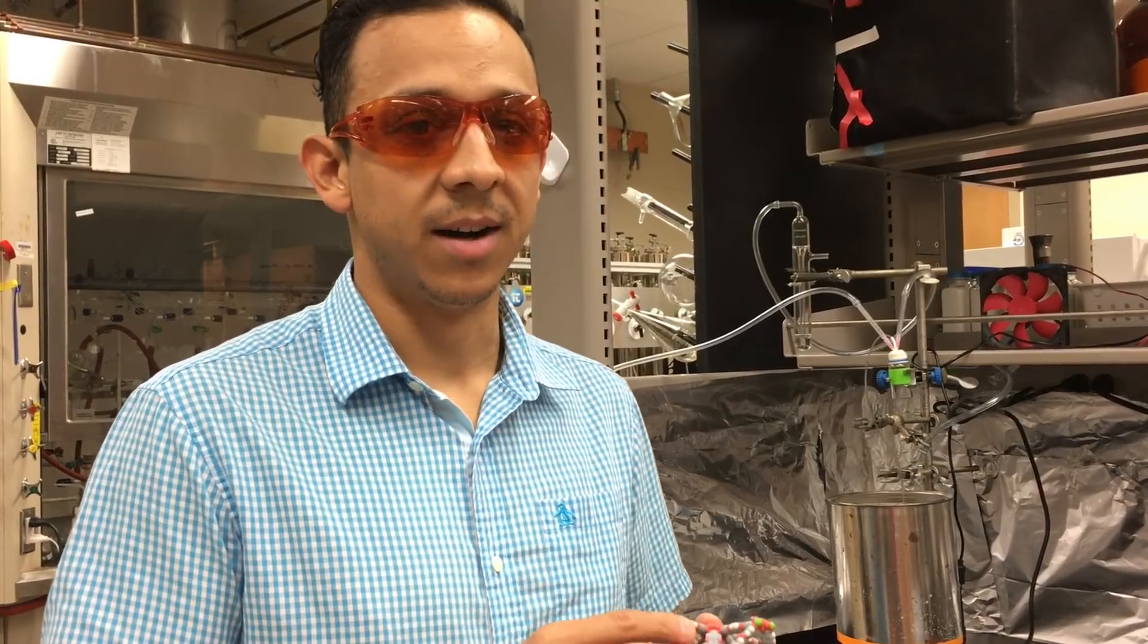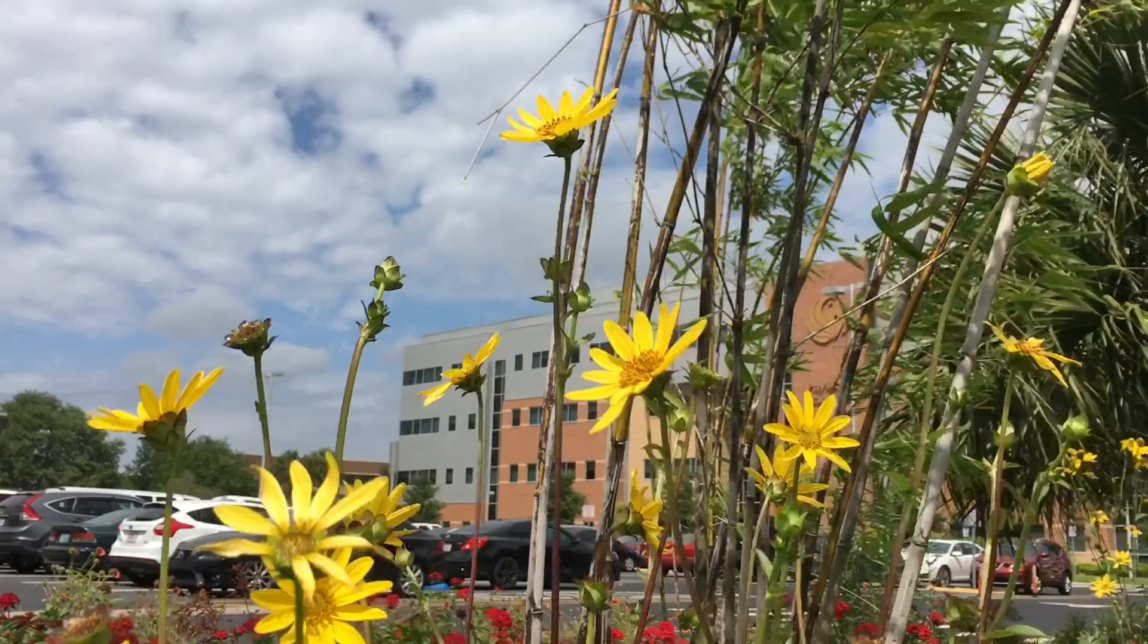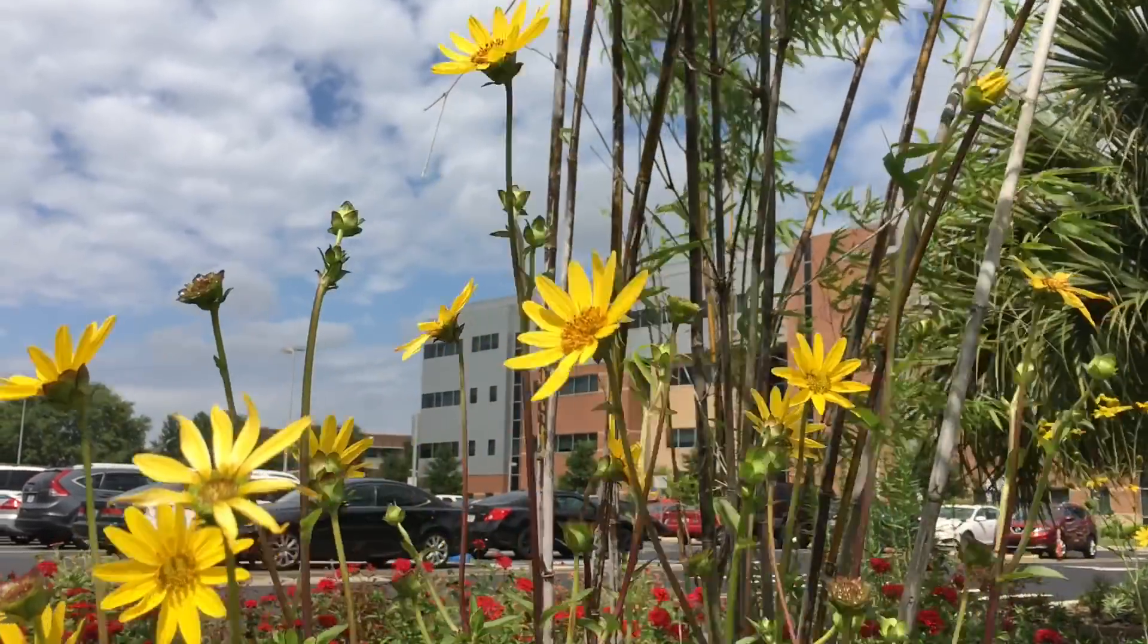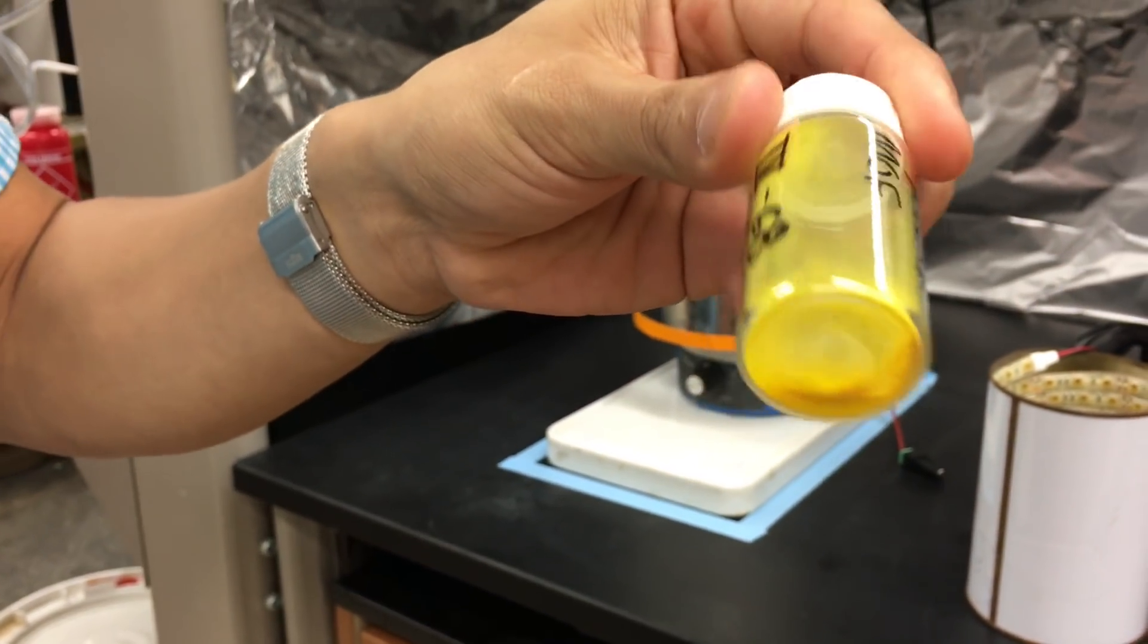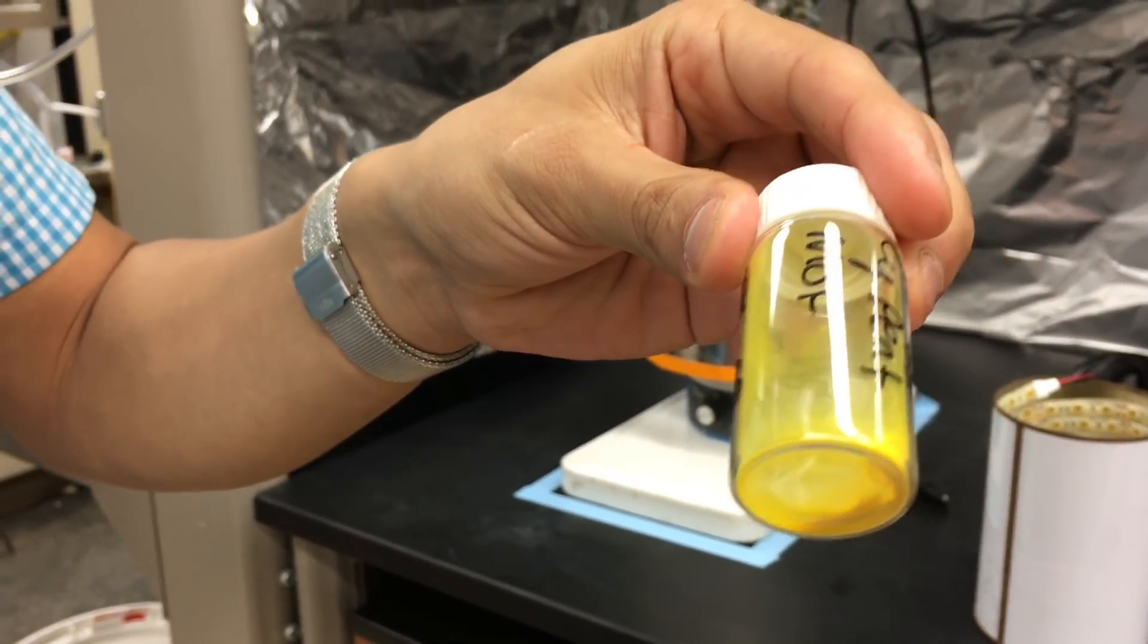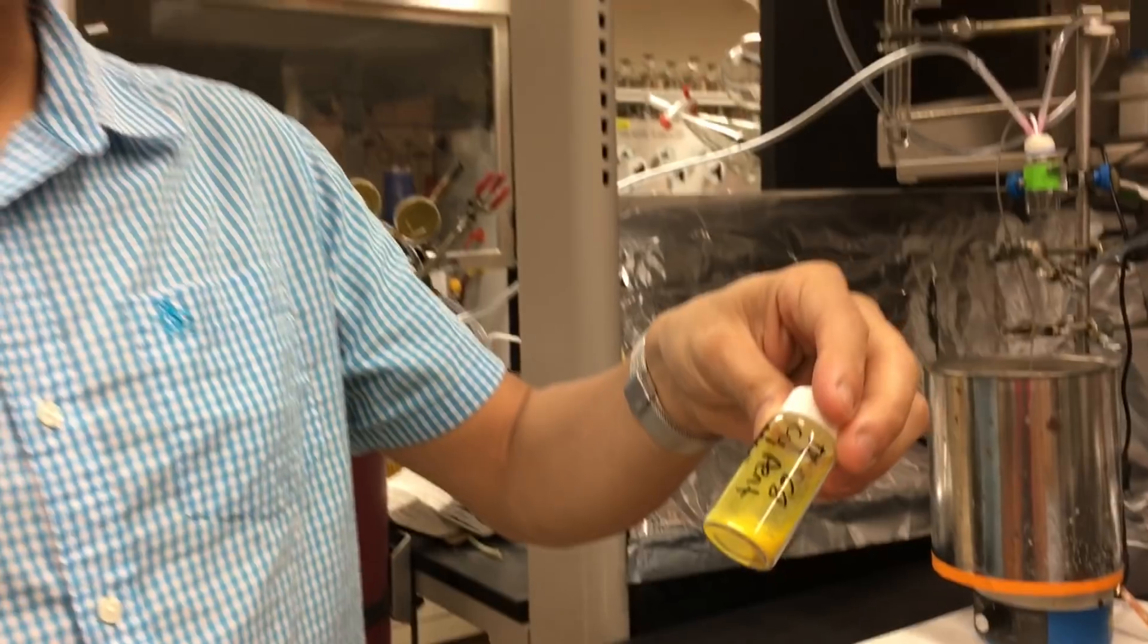So it's like photosynthesis in which plants pick up sunlight and carbon dioxide and turn it into a sugar. So in this case, instead of having a plant, we have materials like this that capture the sunlight and turn the carbon dioxide into something similar to sugar.